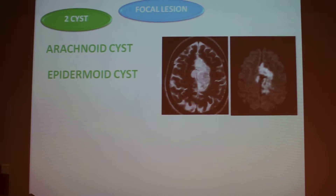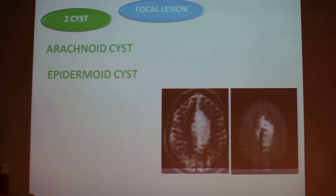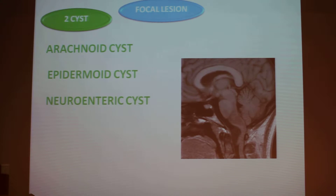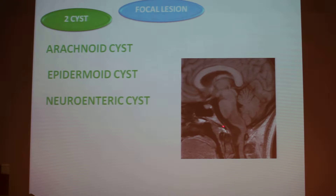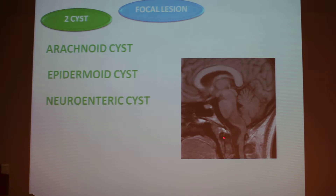This is very obvious on diffusion. It can be a neuroenteric cyst, which is often rich with protease, and the location of this cyst is very specific. It's often in this location anterior to the junction between the cervical spine and the brainstem, and you have to think of this diagnosis when you have this cyst in this location.